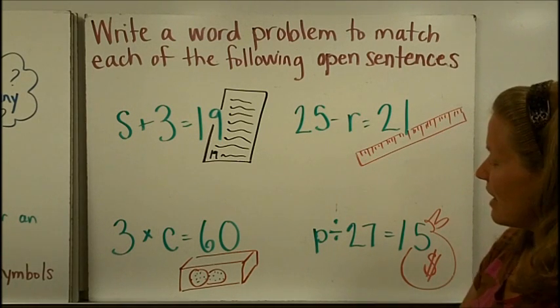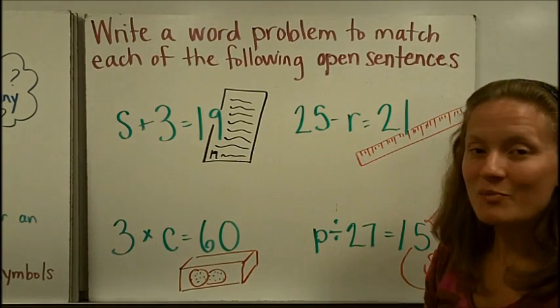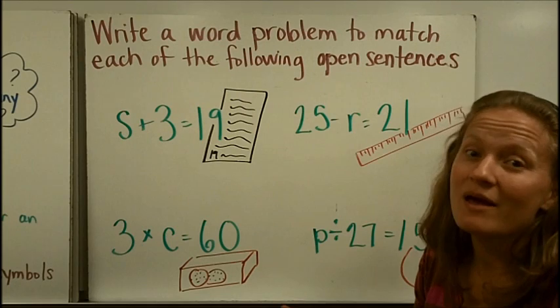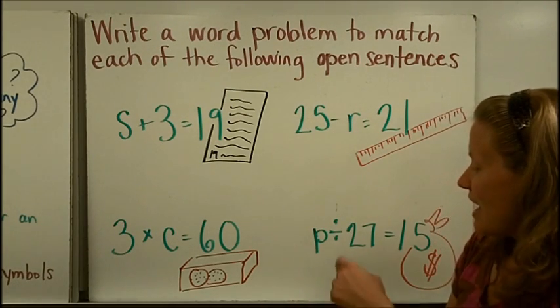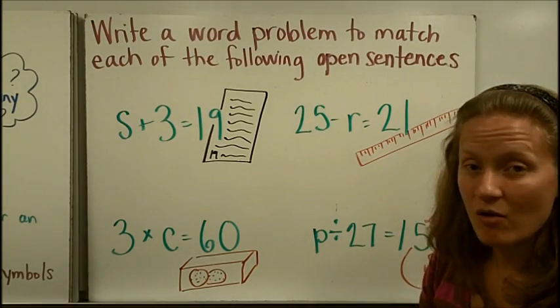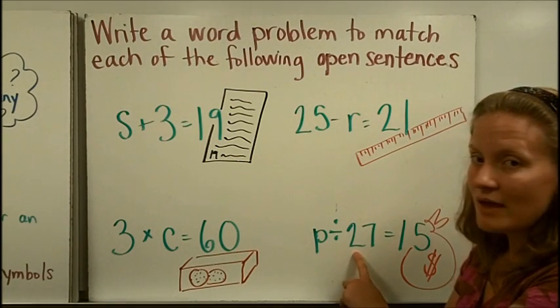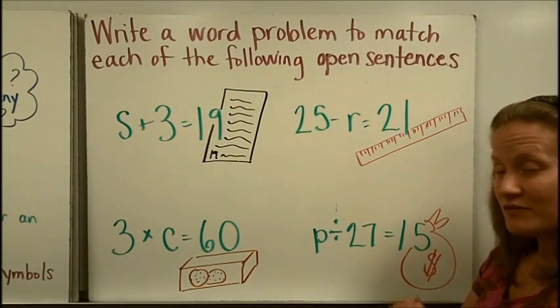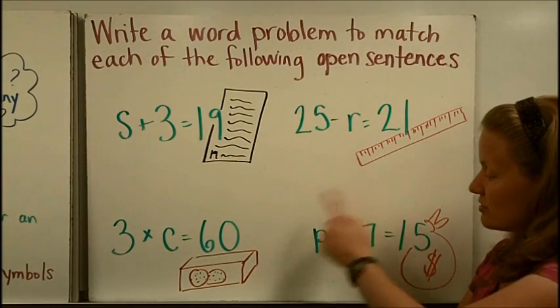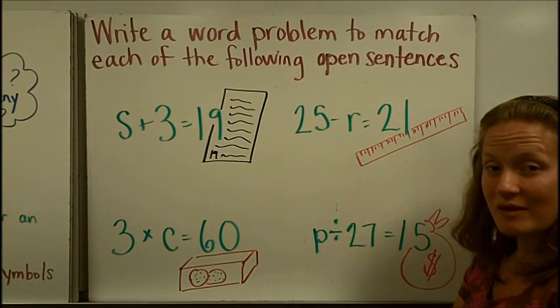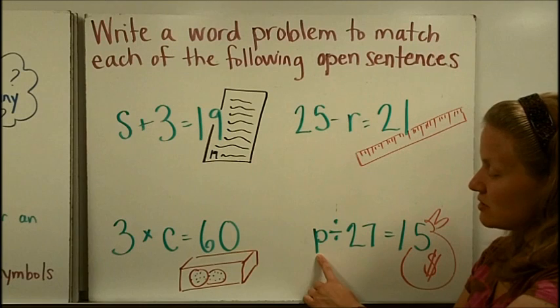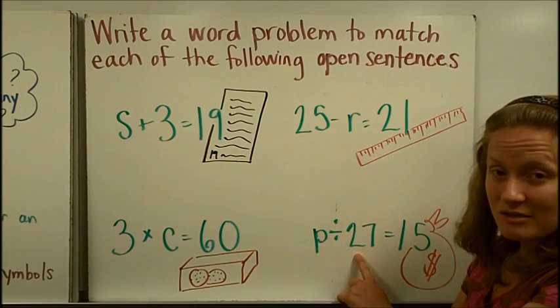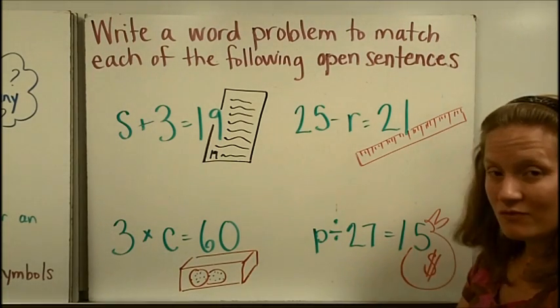And then finally, I started with P number of pennies, an unknown amount of pennies. And I divided them evenly among our whole class, all 27 people. And each person got 15 pennies. And I could use this open sentence to figure out how many pennies we started with, because I know that the total number of pennies we started with divided into 27 equal groups equal to 15.